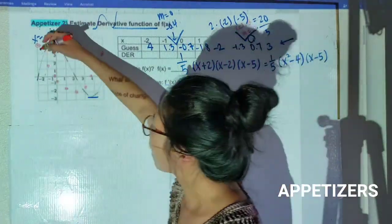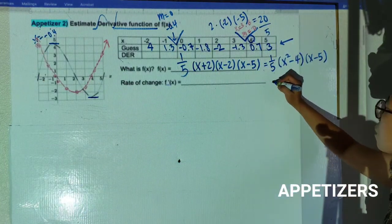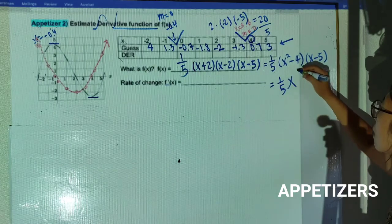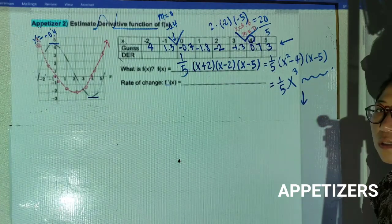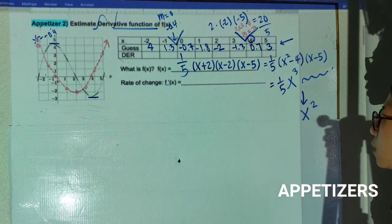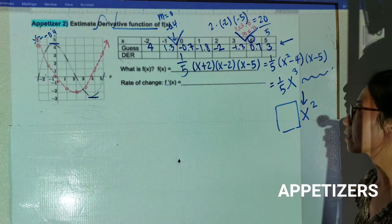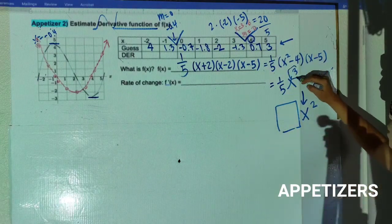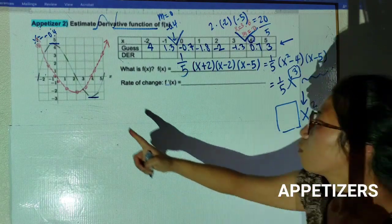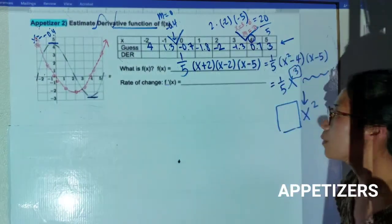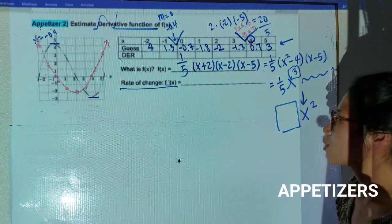Now do you see the pattern? This original function is a cubic function. When I take the derivative, what function did it become? It became an x-squared function. When you take a derivative, the degree becomes one lower. So I get an x-squared graph when I graph the derivative.